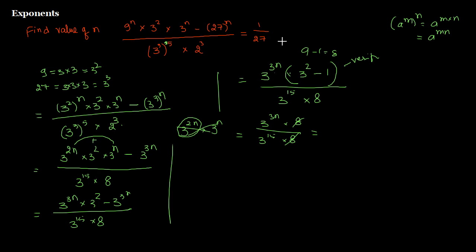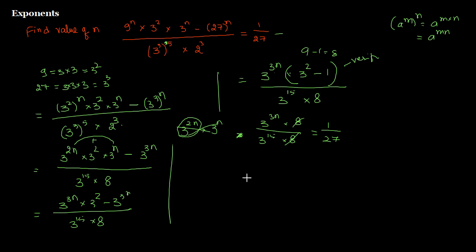The question states this equals 1 over 27. So we set our simplified expression equal to 1 over 27. As we already established, 27 can be written as 3 cubed, so 1 over 27 equals 1 over 3 cubed.